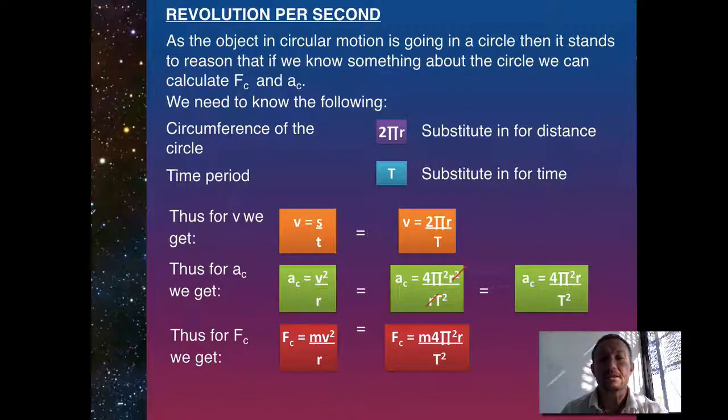and then 4 pi squared over R divided by T squared. Note that that is our V squared over R equation from the green squares that you can see above. So those are a variety of different formulae that we can utilise using our circular motion, and then this can be applied into space.